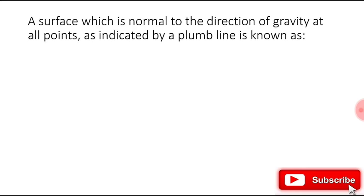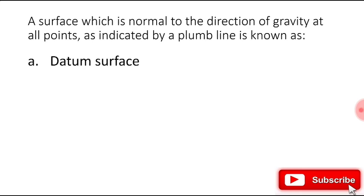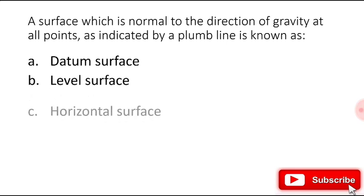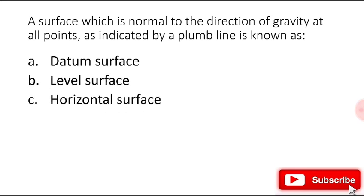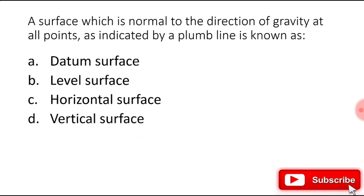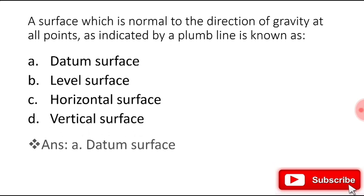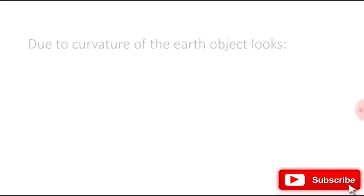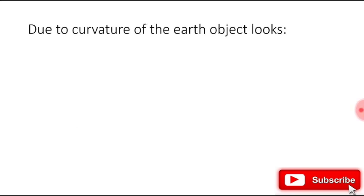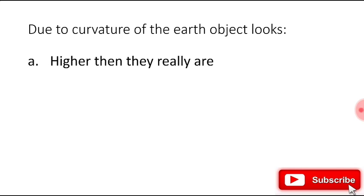A surface which is normal to the direction of gravity at all points as indicated by a plumb line is known as: datum surface, level surface, horizontal surface, or vertical surface? The right answer is datum surface.